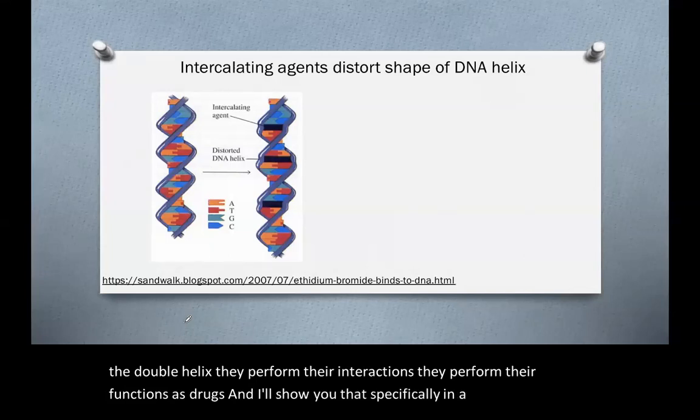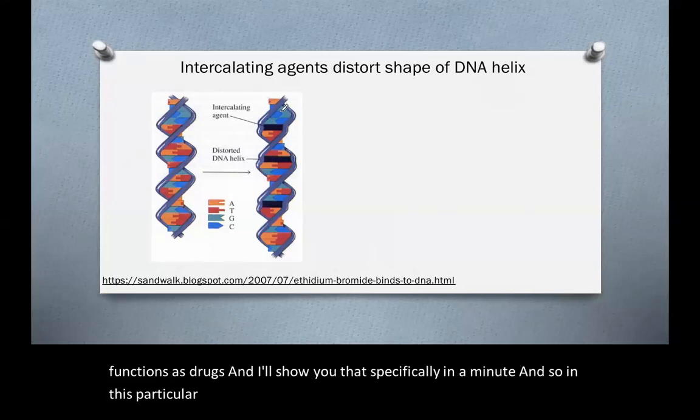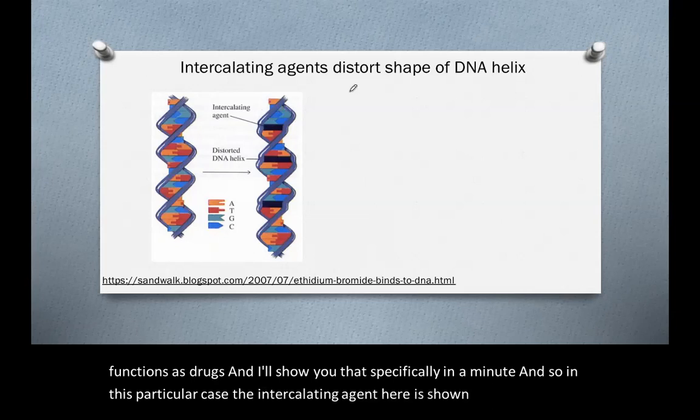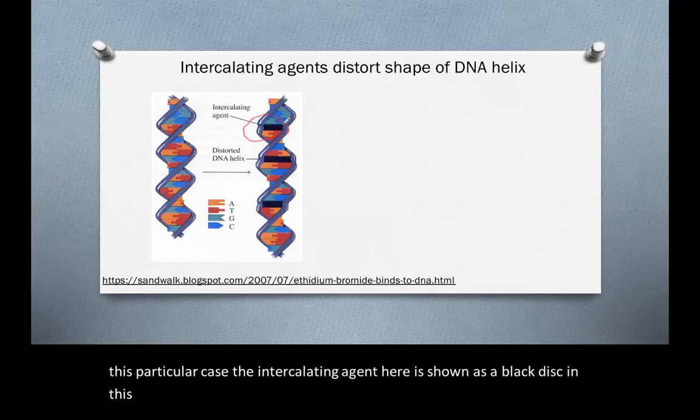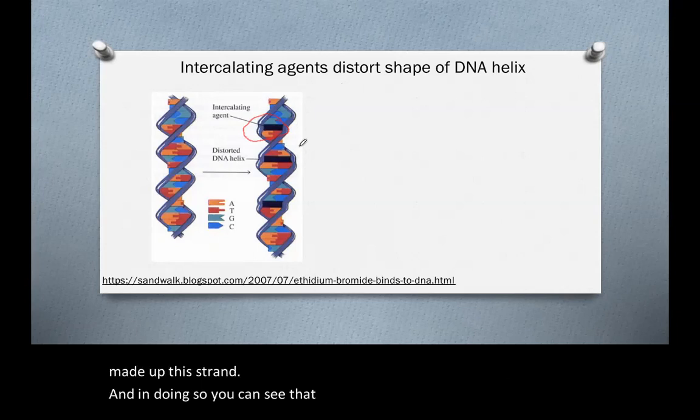And so in this particular case, the intercalating agent here is shown as a black disc. And this disc intercalates or slips right in between base pairs that would have made up this strand. And in doing so, you can see that the DNA double strand is distorted.